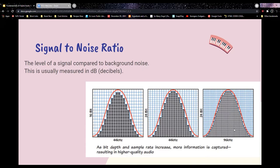Think of the noise floor like the floor of a house — that's where all the background noise sits. The closer your noise floor gets to your signal — meaning the louder the background noise — the harder it becomes to even hear you. It's like being on a phone in a shopping mall and the person can't hear you because there's so much noise happening — the same thing can occur when you're recording.